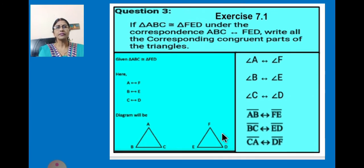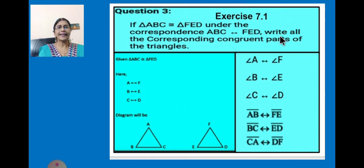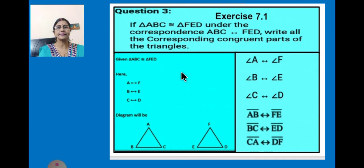Now children, we will go to question number 3 of exercise 7.1. The question states: if triangle ABC is congruent to triangle FED under the correspondence ABC corresponding to FED, write all the corresponding congruent parts of the triangles. First we write what is given: triangle ABC is congruent to triangle FED. The correspondence ABC corresponding to FED means A corresponds to F, B corresponds to E, and C corresponds to D.